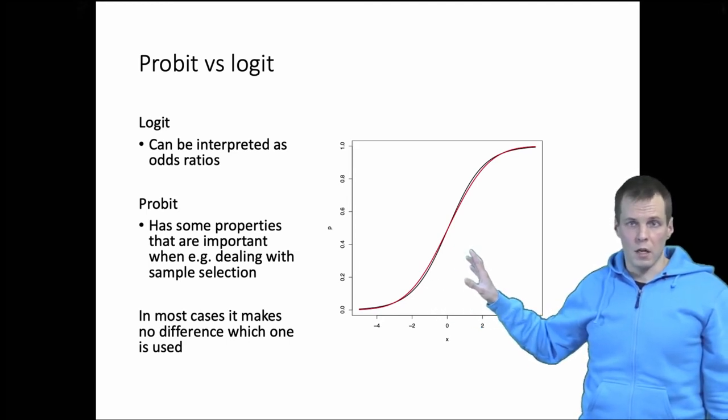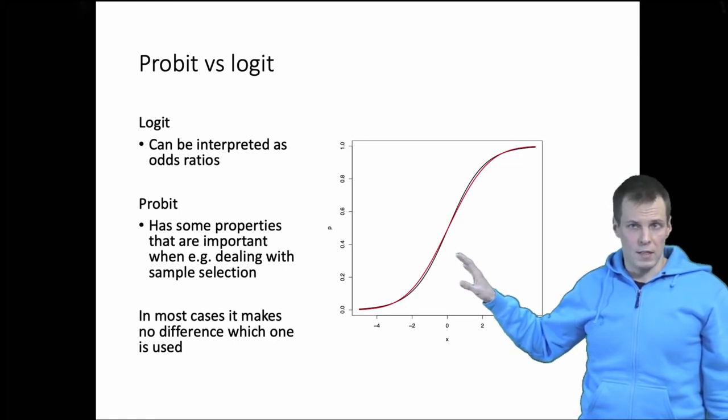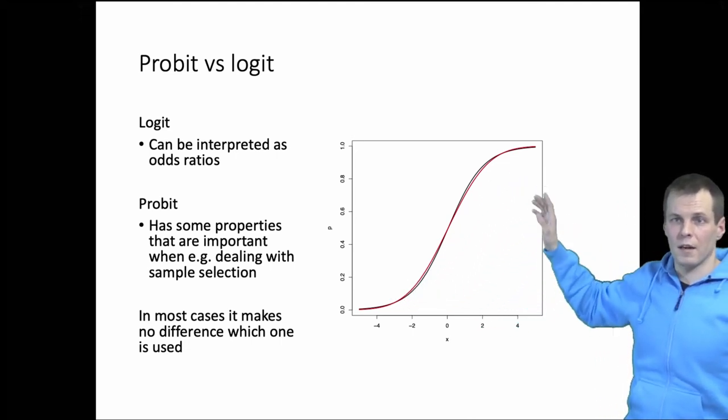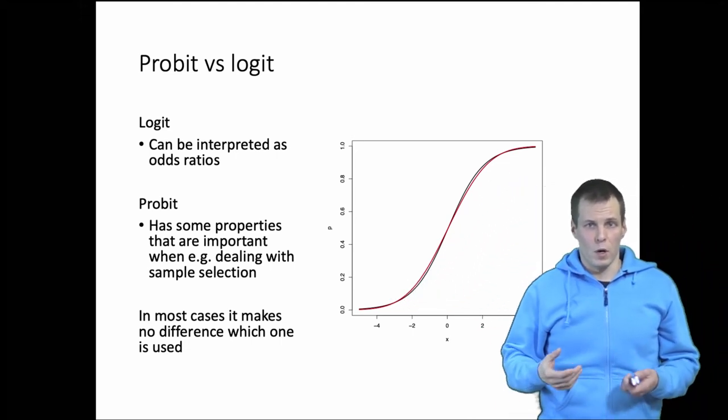This shows the logistic curve in black and probit curve in red fitted to the same data. We can see that there's almost complete overlap, so it's largely a matter of convention which one we apply.